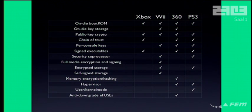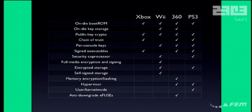The 360 has eFuses, which are used to prevent downgrades. It actually blows a fuse inside the CPU when you perform certain system updates, and you can't reverse that. So once you run an update, there's no way to downgrade unless you can break the chain of trust before that check happens, which, as far as I know, has not happened so far.